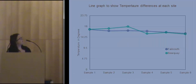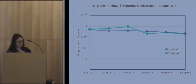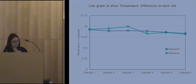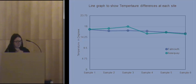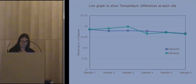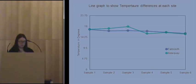This graph shows the temperature differences at each site. Although there is some variation in temperature on a sample basis, overall there is no statistically significant difference between the samples. A number of factors need to be considered: the thermometer used was an entry-level device that may have calibration issues, and temperature was only recorded once per sample. A better method would have been to record temperature continuously throughout sampling to gain an average and produce a more accurate result.